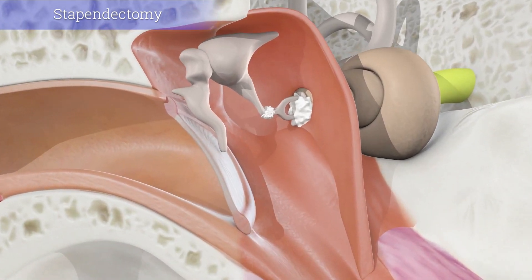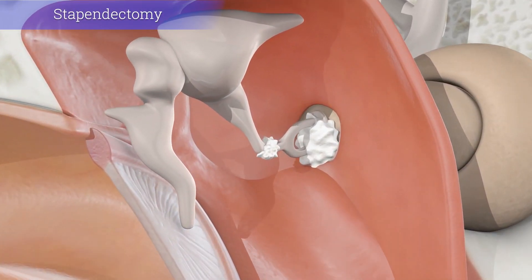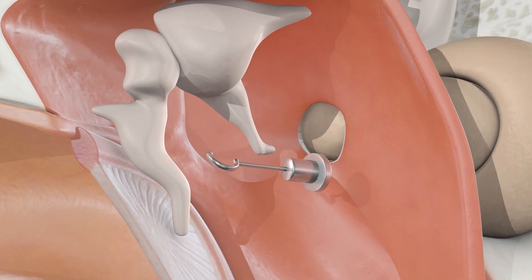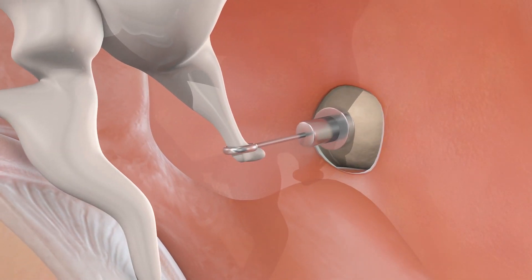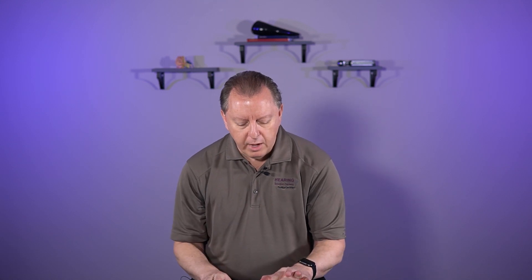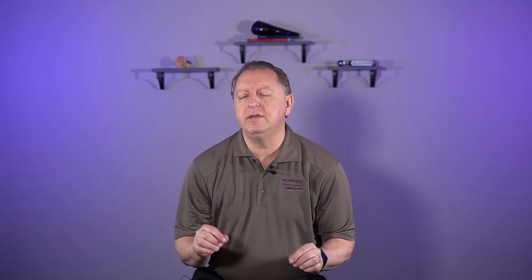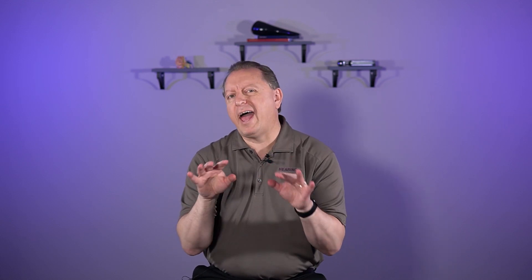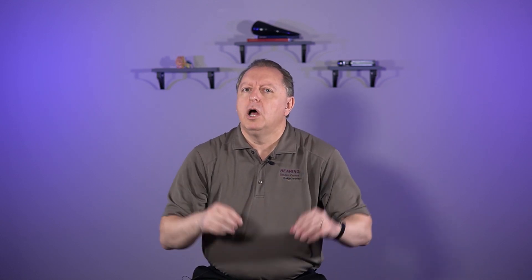The stapedectomy is similar to the fix in there, but what they're doing is replacing the bone — either with a metal prosthesis or sometimes with a high-grade plastic that will act more like the natural bone. The problem with otosclerosis is that it can easily come back.